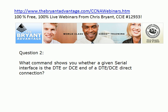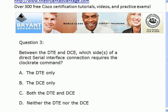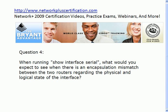We could look at the cable, but that's not always easy to do, and they're definitely not going to let you take a cable into the exam room, so we better know how to see that. Question three: between those two sides, which side or sides requires the clock rate command — both, one or the other, or neither? Question four: when you run show interface serial, what would you expect to see when there is an encapsulation mismatch between the two routers as regards the physical and logical state of the interface?